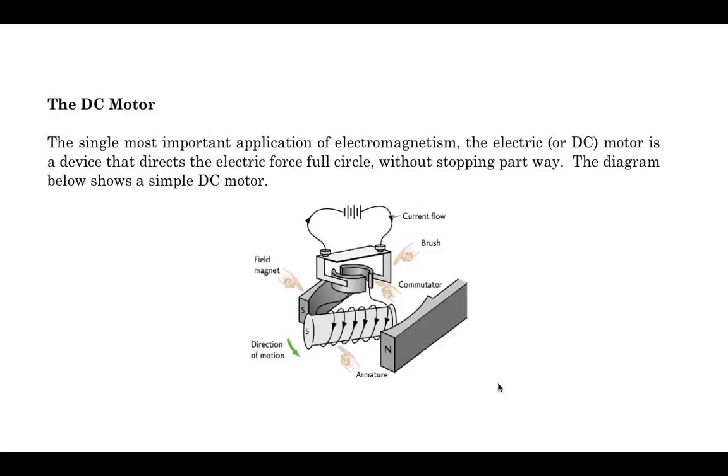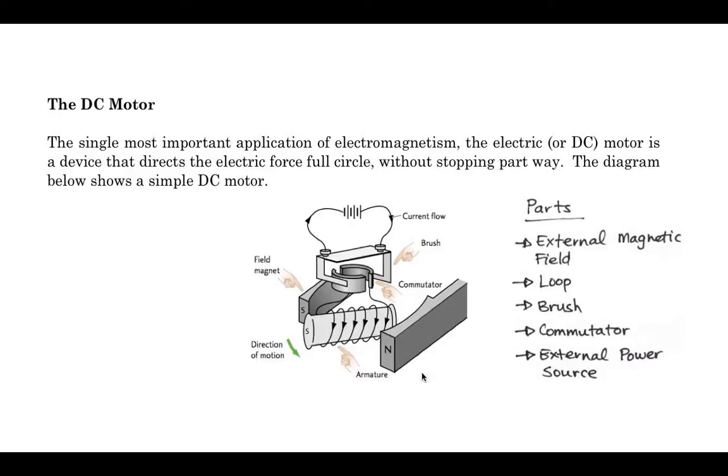And we're going to build these tomorrow in class, or the next day in class. We're going to have an opportunity to build our own DC motor. But basically, these are some of the parts, and these are really important. So we've talked about the external magnetic field. You need to have a loop, so a system of loops right here. So all these coils that are going to be looped around some central axis.